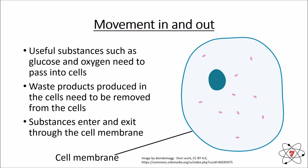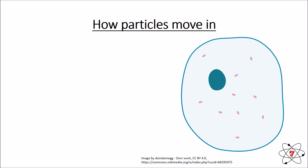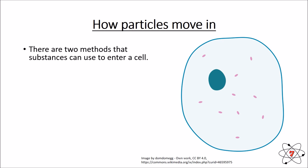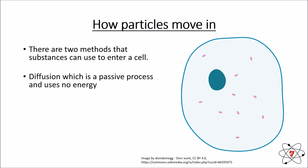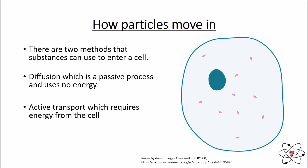There are two methods that substances can use to enter and exit a cell. The first one, and the one we're mainly looking at today, is diffusion. This is a passive process that happens naturally with no intervention and requires no additional energy. The second process, which will be covered in an advanced lesson, is active transport.